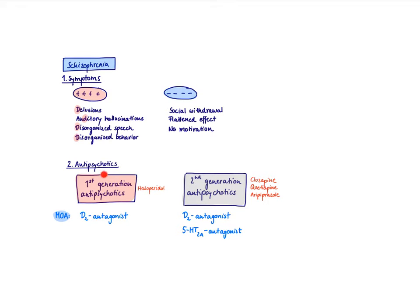And they're going to be divided up in two generations. First generation, a prototype is haloperidol. And second generation, for example, clozapine, quetiapine, aripiprazole.